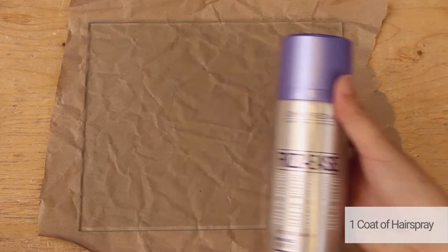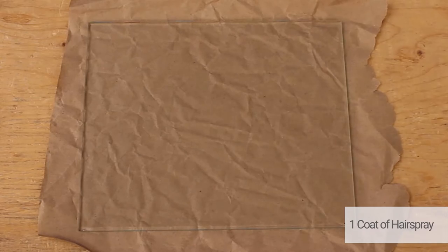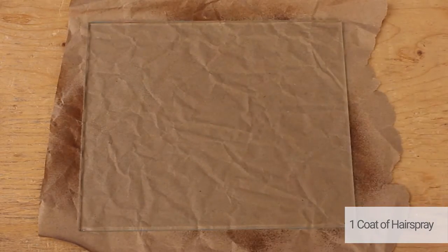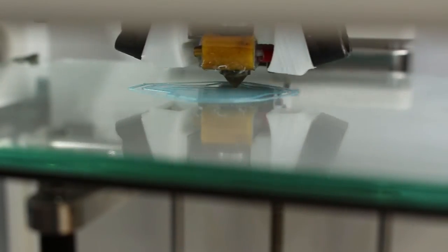We first have the John Frieda Frizz Ease Firm Hold hairspray. Let's try one coat and see what happens. After spraying, you will have to wait for it to dry up. It's sticking on the first layer. It came off on the second though, causing a blob of filament on the hot end.